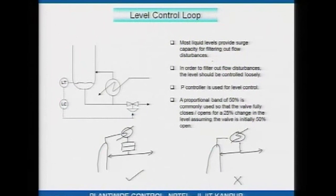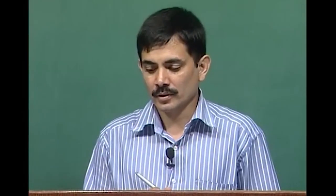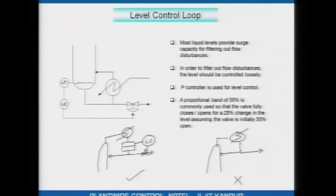Since the purpose of surge capacity is to filter out flow disturbances, the level should be controlled loosely. If the level controller is tuned to be extremely tight, the level will not fluctuate at all, defeating the very purpose of putting in that reflux drum. The drum was installed so that flow disturbances can be averaged out by allowing changes in level. Tight level control defeats the purpose of that surge capacity. Levels should be loosely controlled — they are like shock absorbers in a car, provided to dampen disturbances for smooth plant operation.